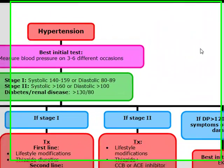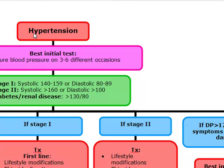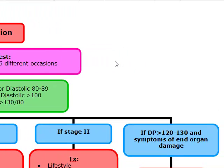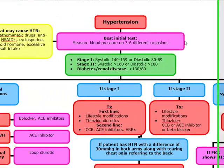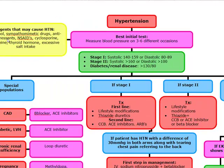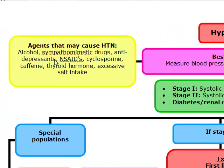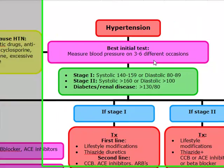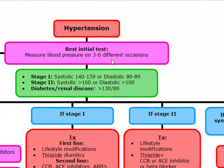The next topic we're going to be discussing is hypertension. We can't diagnose hypertension with just one test — we need to do more than one. Usually we're going to have to measure blood pressure on at least three to six different occasions, because there are other things that can cause hypertension, such as alcohol, sympathomimetic drugs, antidepressants, NSAIDs, cyclosporine, caffeine, thyroid, or even excessive salt intake. So first, we want to diagnose and classify our hypertension.